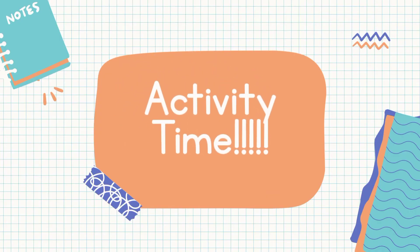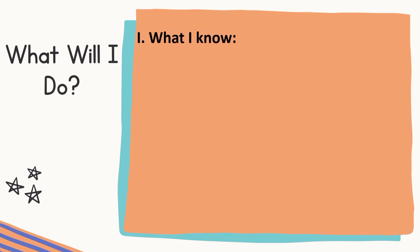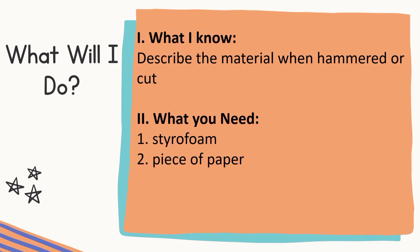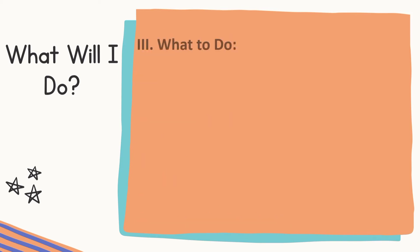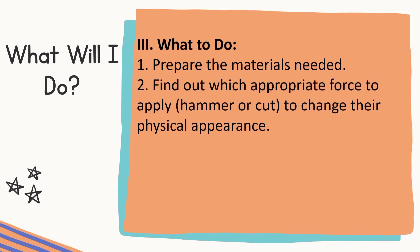It's activity time! For this activity, you will be able to describe the material after being hammered or cut. The materials you need are: Styrofoam, a piece of paper, a block of wood, a metal bottle cap, and a piece of hollow block. Prepare the materials needed, then find out which appropriate force to apply — whether to hammer or cut — to change the physical appearance of each specific material.